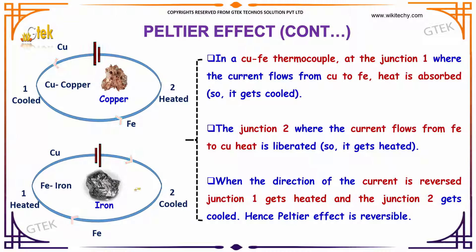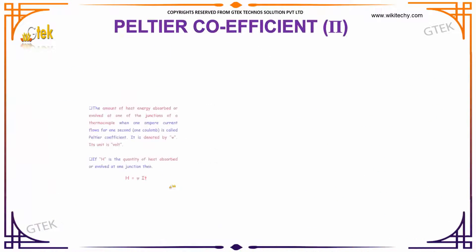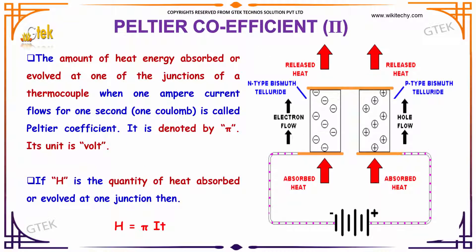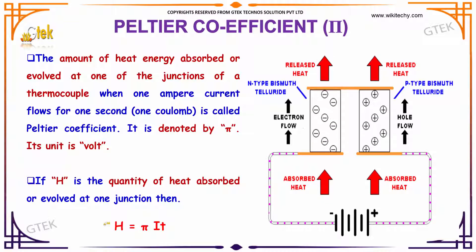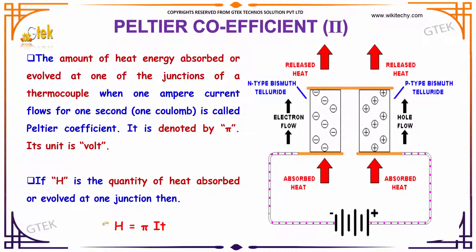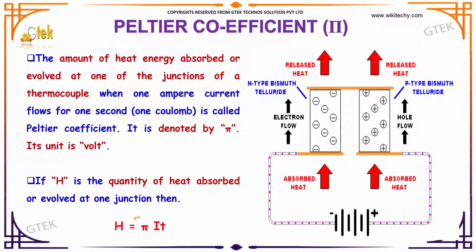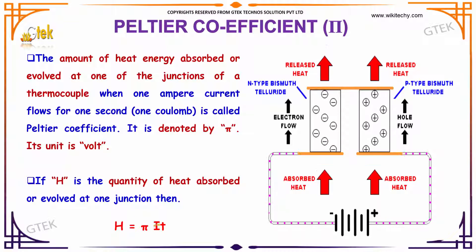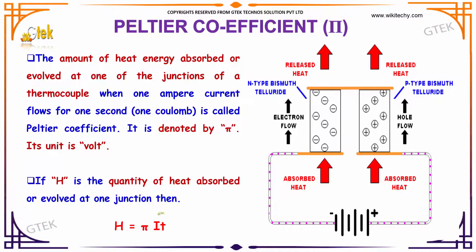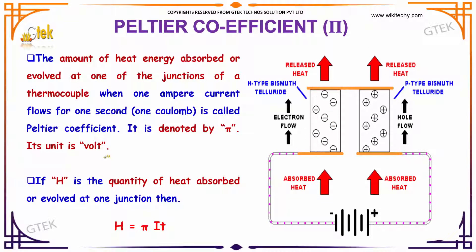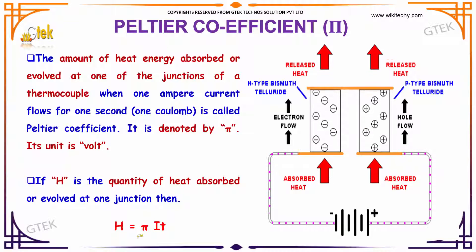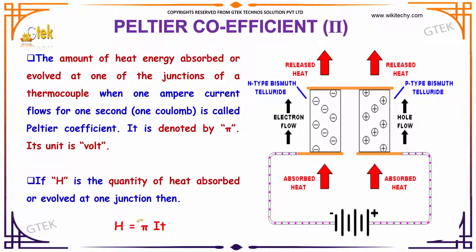It indicates the Peltier effect is reversible. The amount of heat energy absorbed or evolved at one of the junctions of a thermocouple when 1 ampere of current flows for 1 second is referred to as the Peltier coefficient, and it is denoted by the symbol pi.